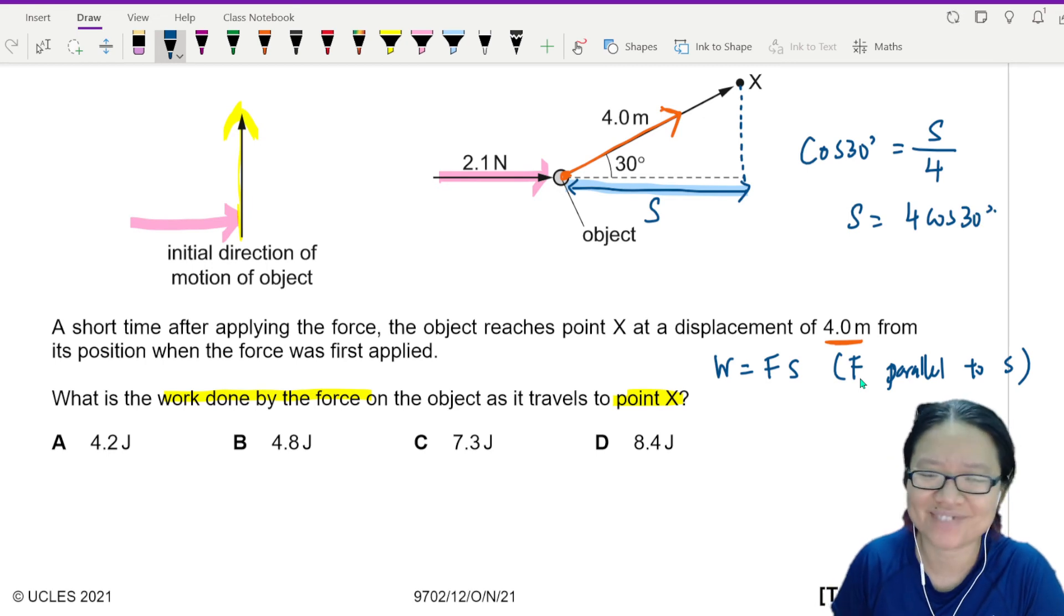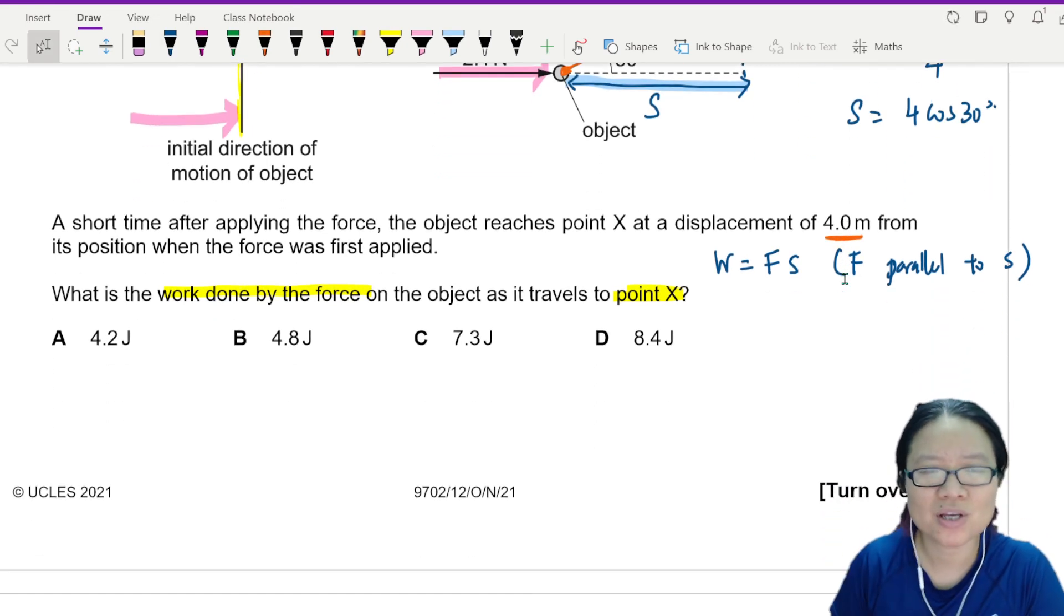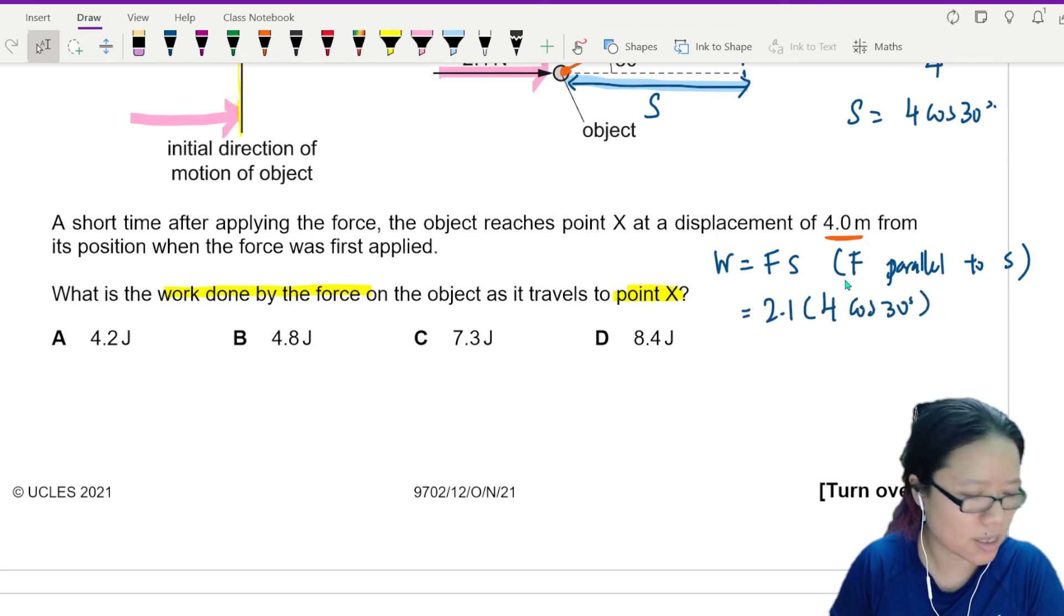Or you can resolve, you know, 4 cos 30. So this one, you will put 2.1 times 4 cos 30. And that will give you 7.27 joules.